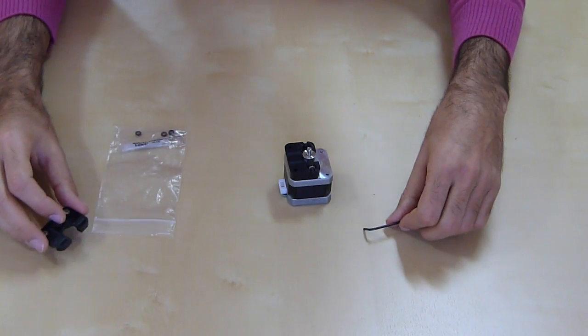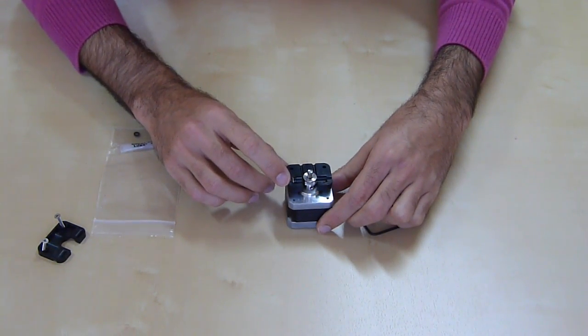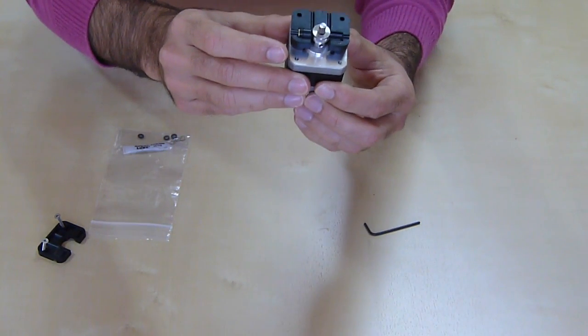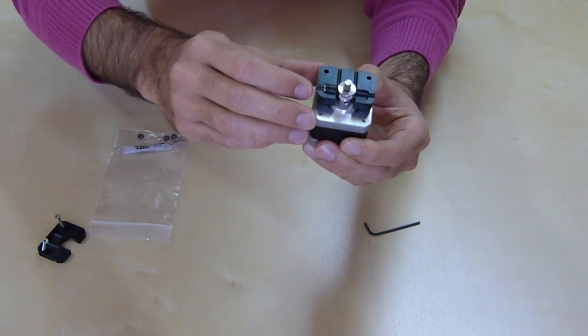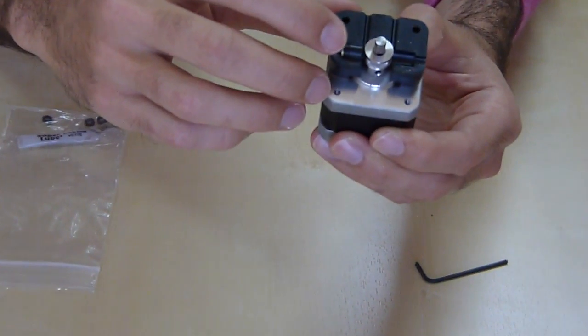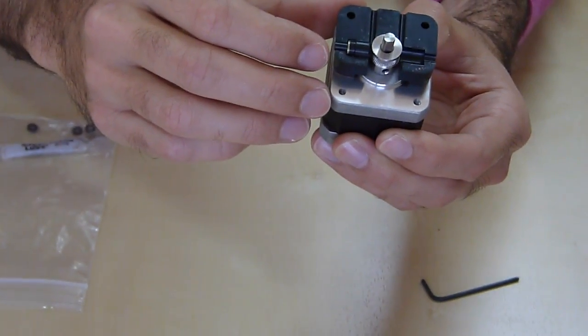Once you remove this cover, you will see there is a small plunger here. With this plunger, you will probably need to add another washer.